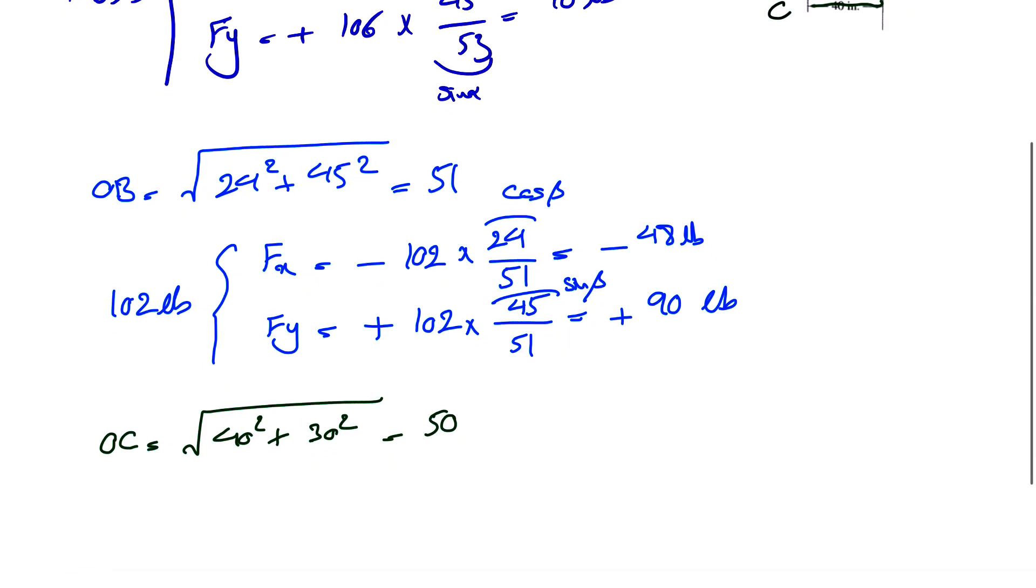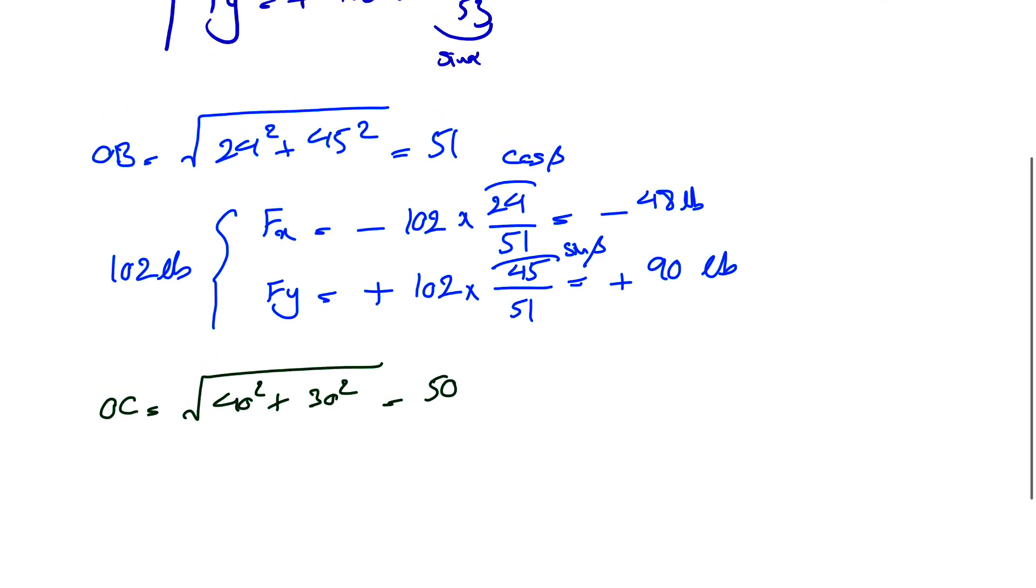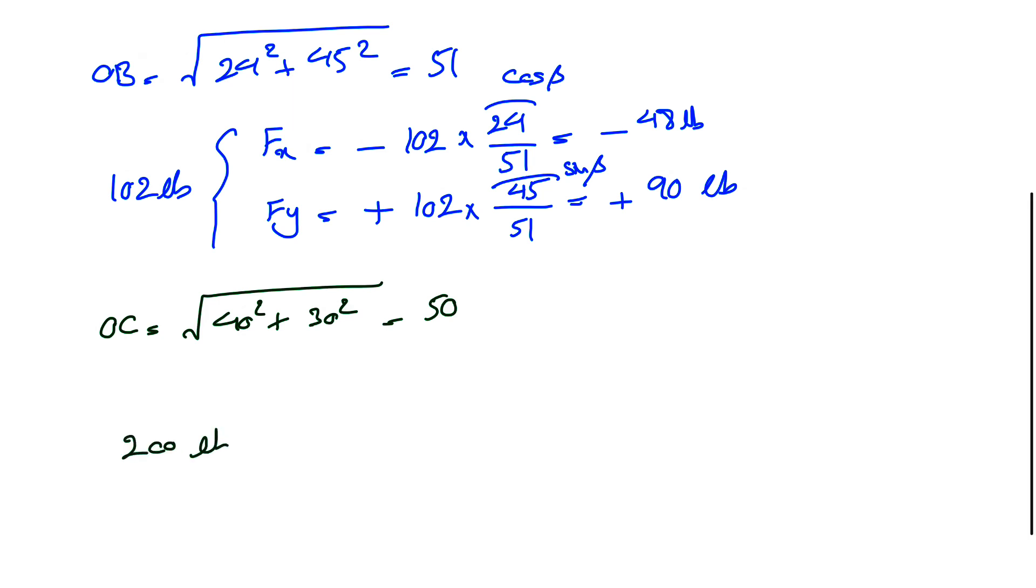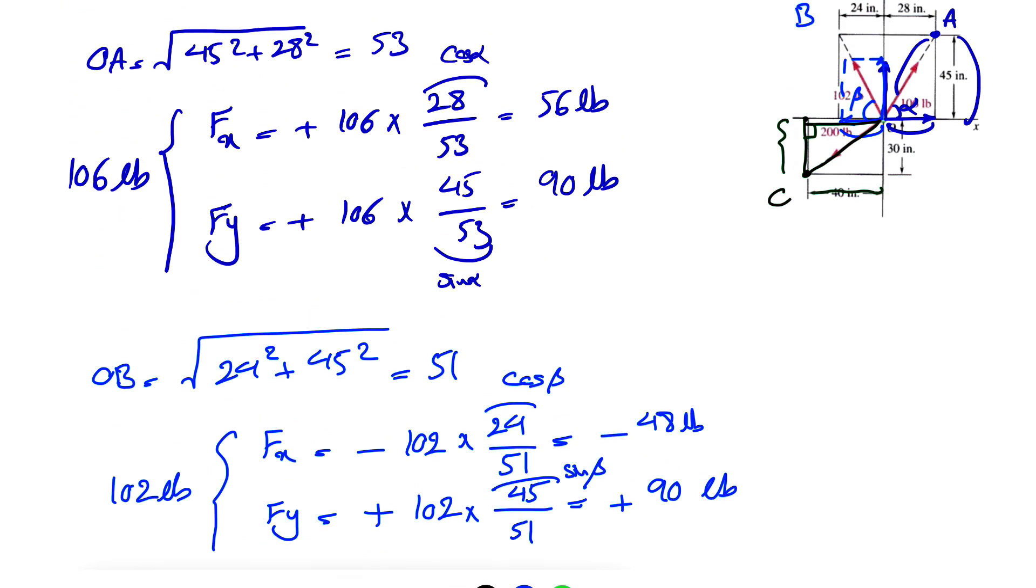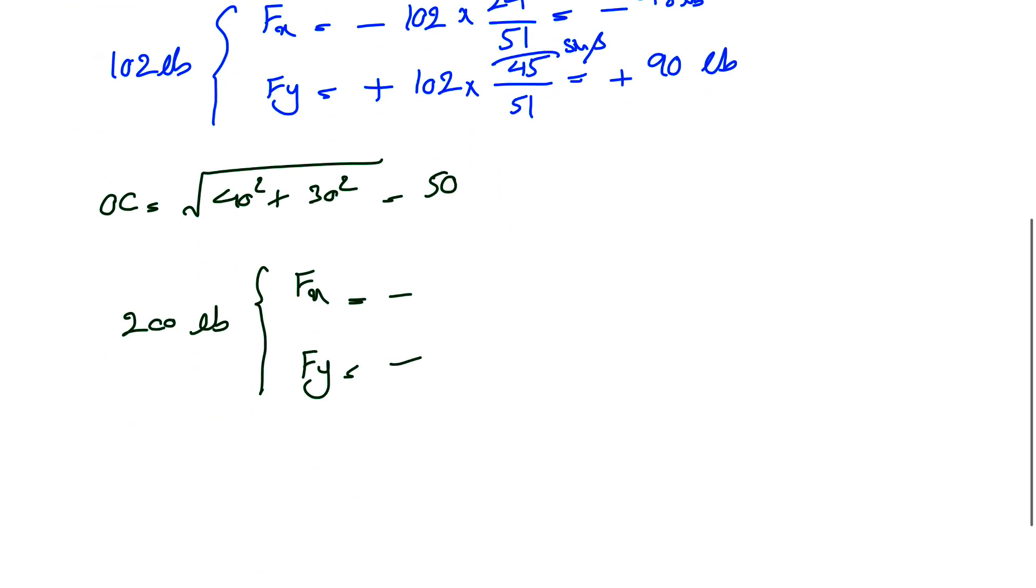So the right triangle, the force is 200 pounds. And we are trying to find the fx and fy. Let's get back in here. So this will be our x component. And this will be our y. We can see they're both along the negative x and y axis. So we have a negative sign for both, 200, 200.